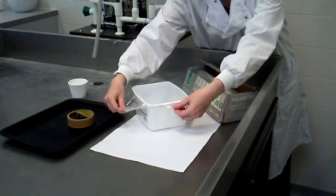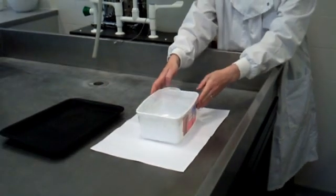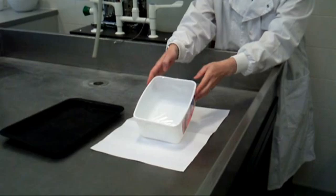Start by covering the top of the box with the cling film. Use the tape to stick the cling film down over the edges, making sure that the top is tight.